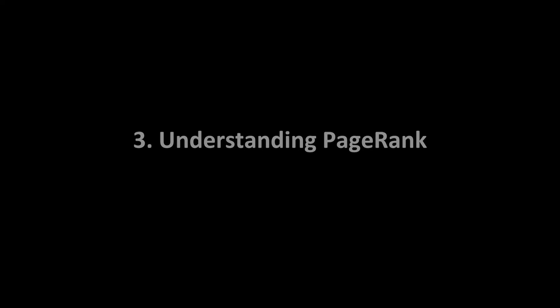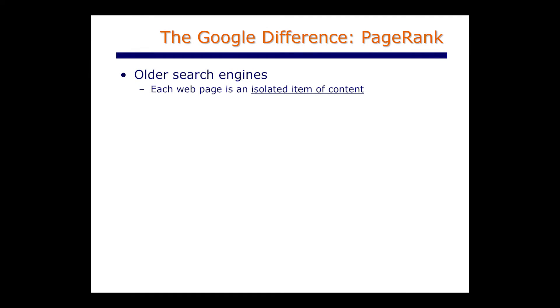The secret source behind Google's search approach 20 years ago and today was an idea called PageRank. Older search engines used a content-based approach. They treated each web page as an isolated entity, analyzed the content of that page, and perhaps analyzed the source of that page to make a determination about how important it was.